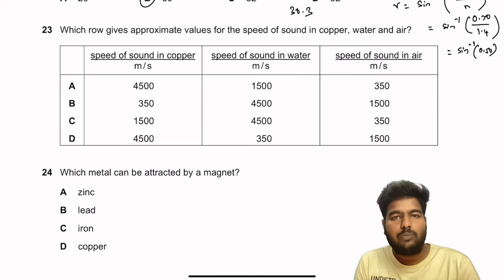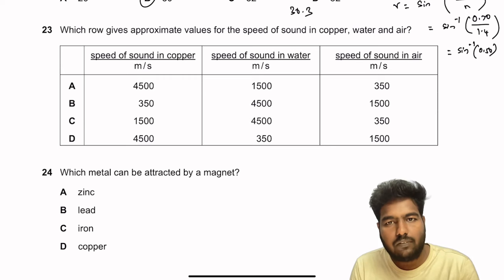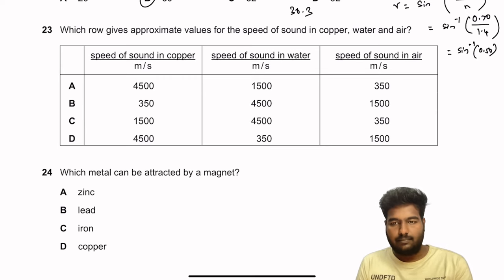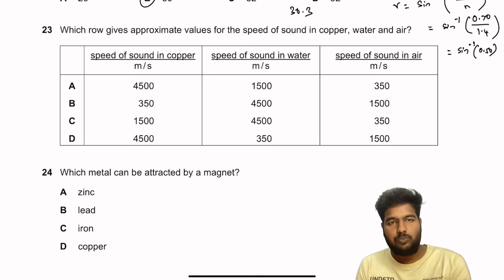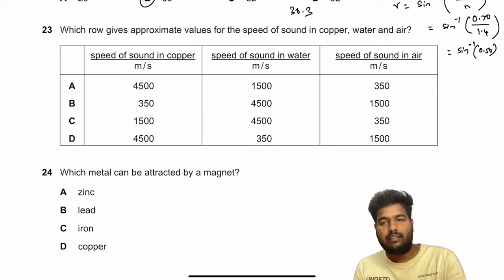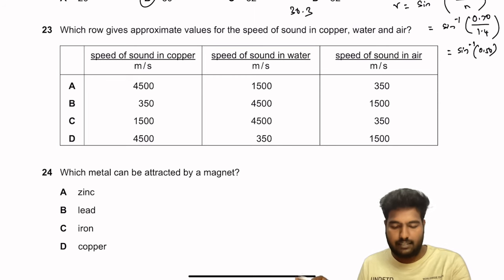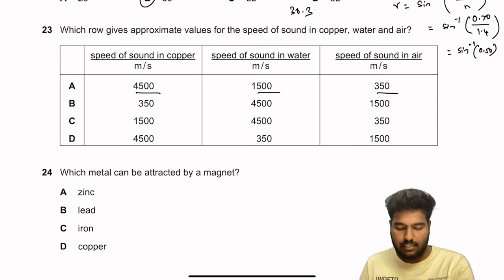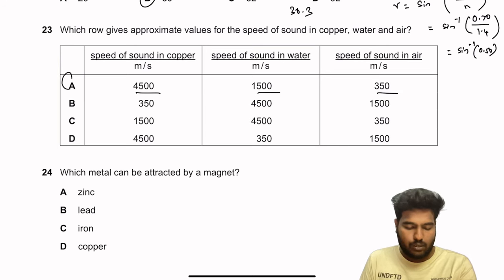Question 23: Which row gives approximate values for the speed of sound in copper, water, and air? Sound travels fastest in solids, then liquids, then gases. So the values should decrease from copper to water to air. Only option A shows decreasing values. So A is the right answer. It is worth remembering these values for the IGCSE exam.